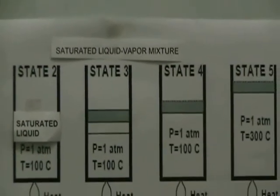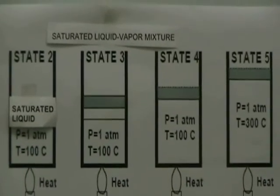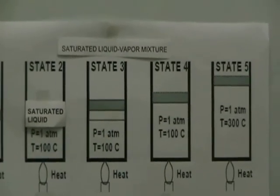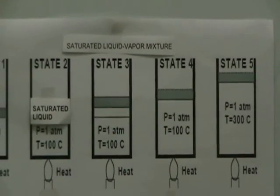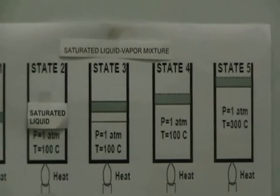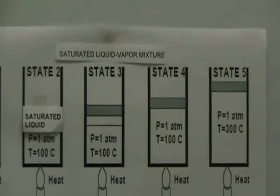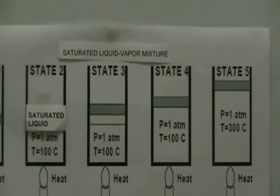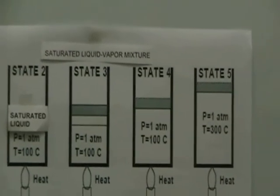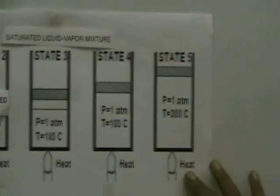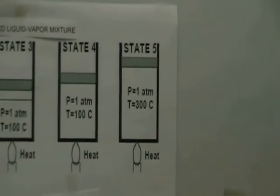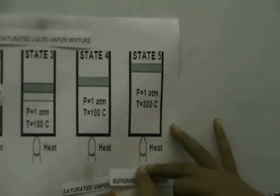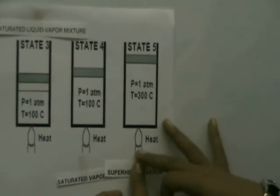Once the phase change process is completed, a further transfer of heat results in a high-temperature vapor which is not about to condense. This is called a superheated vapor, and this is found here at state 5.